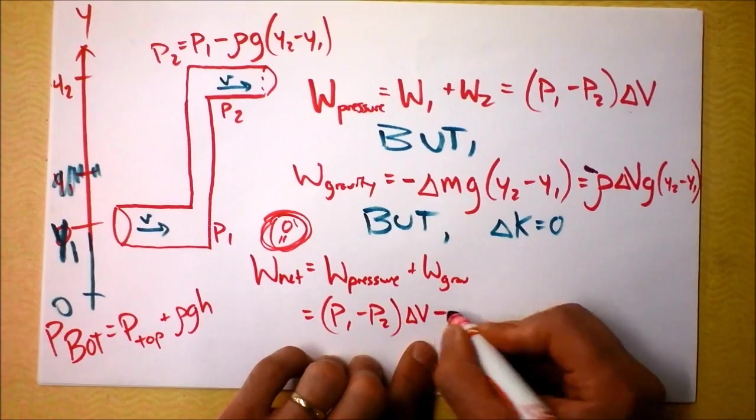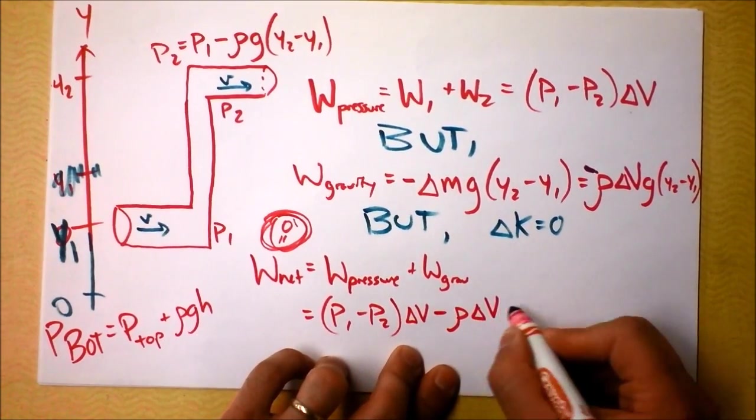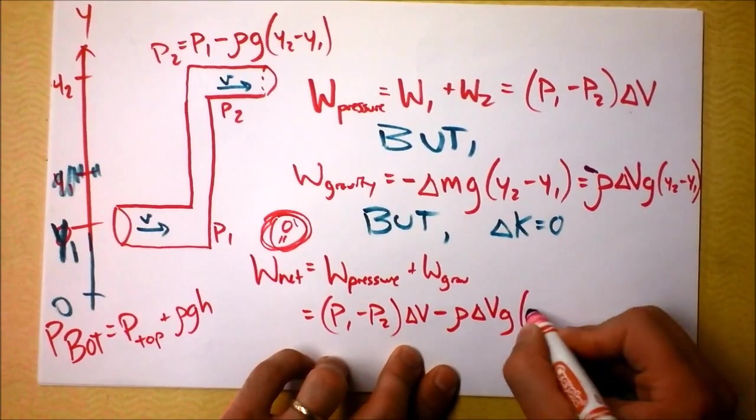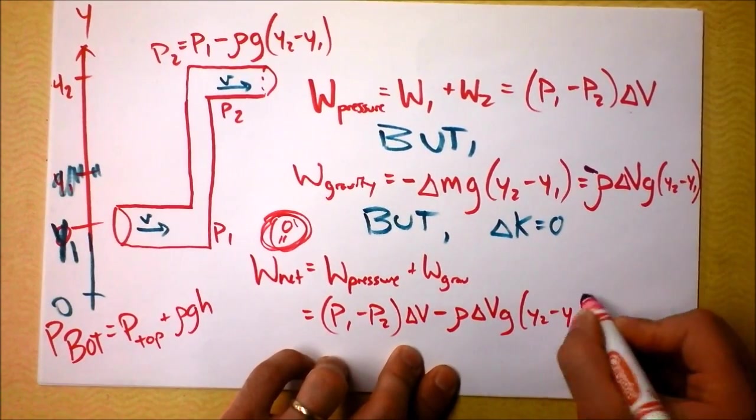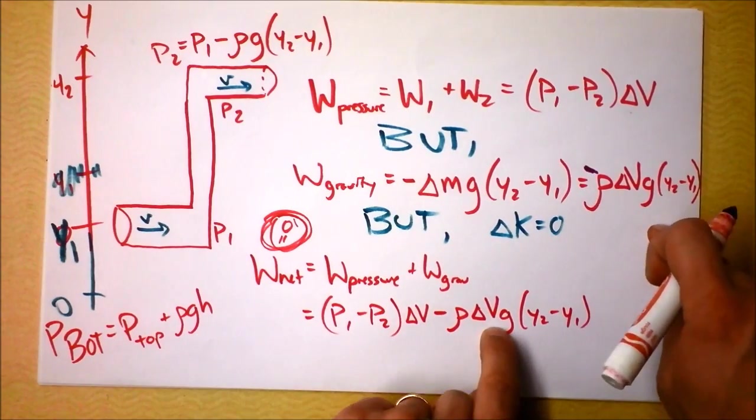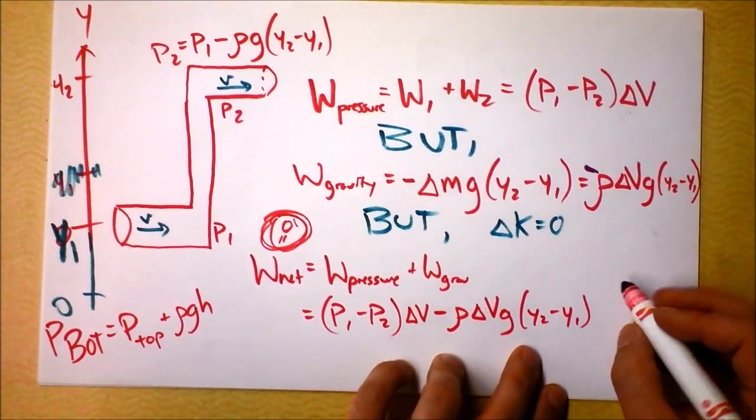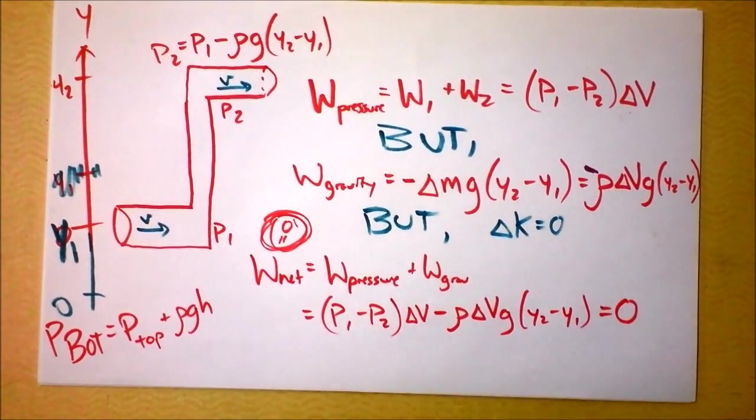Then I need to subtract rho times delta V times baby g times y2 minus y1. Alright, do I have the work done by gravity? It's a negative number. And I'm adding it to the work done by the pressure. It's a positive number. And the whole dang thing, the whole dang thing is equal to sweet nothing.